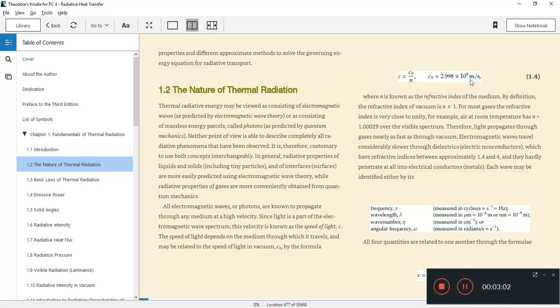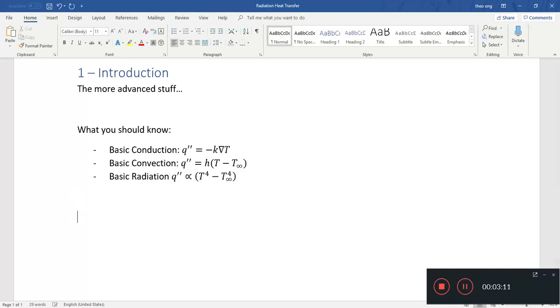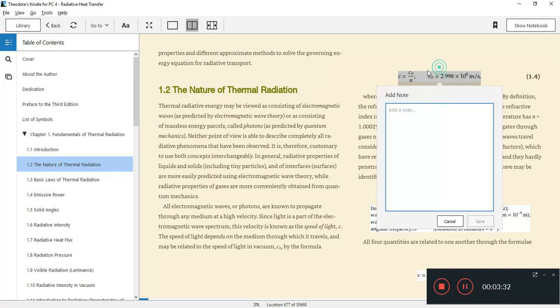This book goes through the basic definitions. Probably the first thing we want to know is that thermal radiation is an electromagnetic wave. This falls into the infrared region.